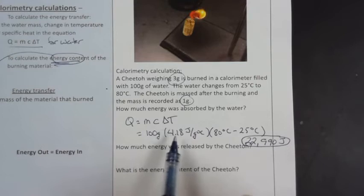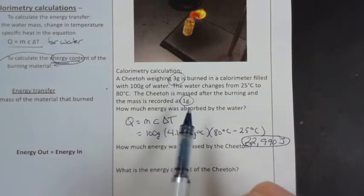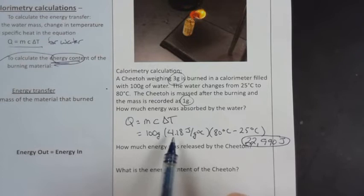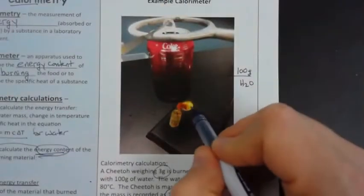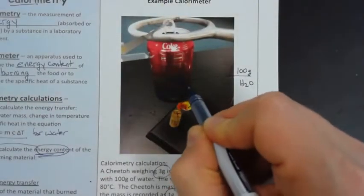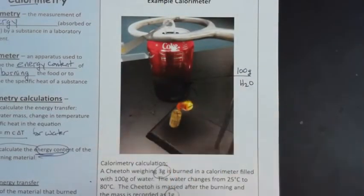This isn't specific heat of Cheeto, okay? So we use the mass of the water, the heat capacity for water, the temperature change of the water to figure out how much energy left this Cheeto and traveled up into that sample of water in the can.